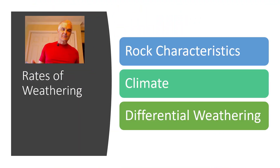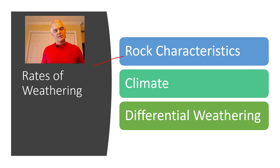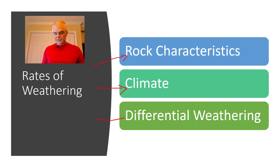Again, we want to continue our conversation about weathering, but now we want to talk about how fast do things weather and what factors affect how fast something weathers. So the rates of weathering are determined by three key ingredients: the characteristics of the rock, the climate in which the weathering is occurring, and something cool called differential weathering. So let's talk about each of these in turn.